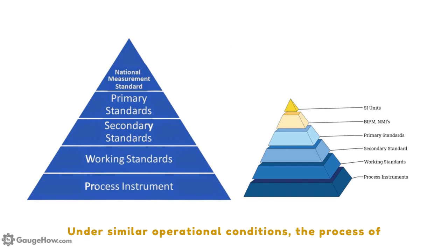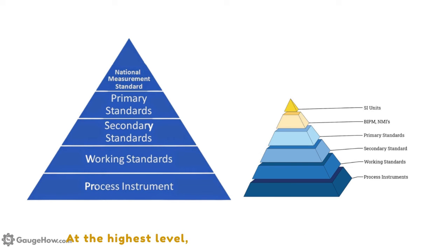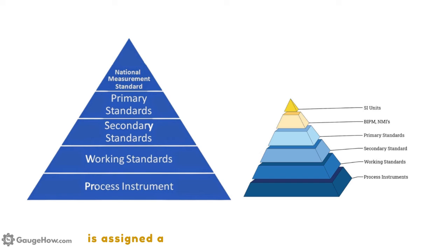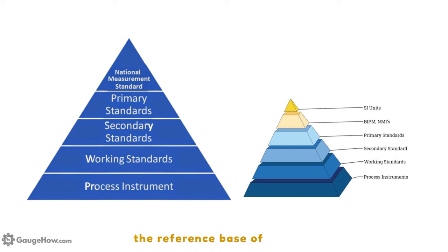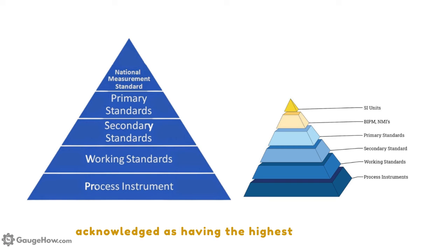The process of calibration is carried out in a hierarchical order. At the highest level, the primary reference standard is assigned a value by direct comparison with the reference base of SI units. The primary standards are designated and widely acknowledged as having the highest metrological values.